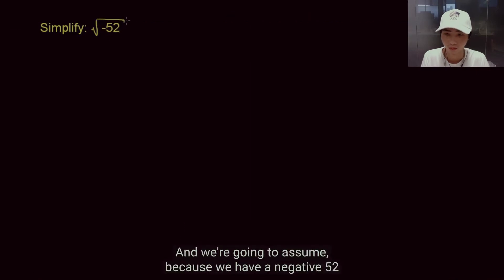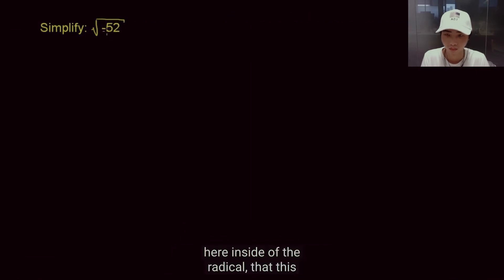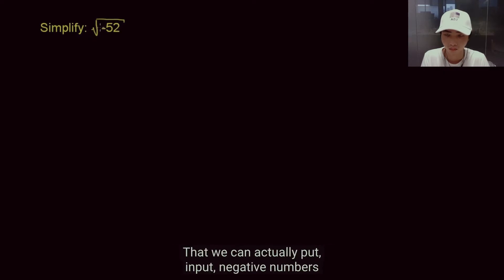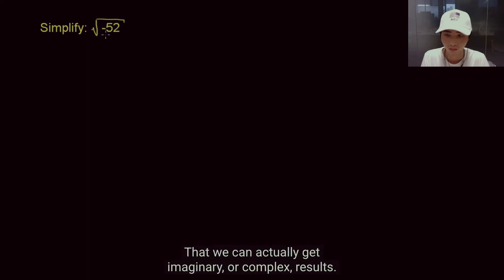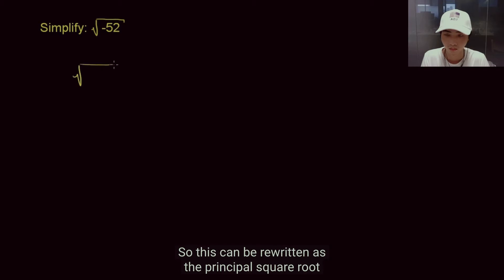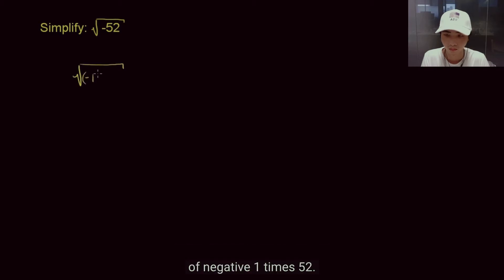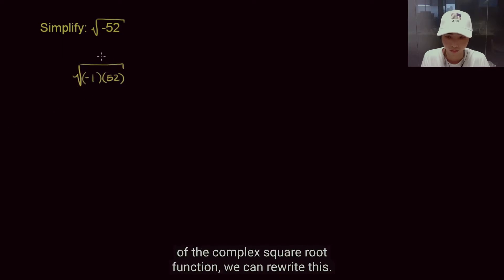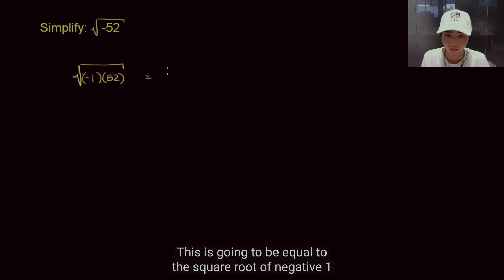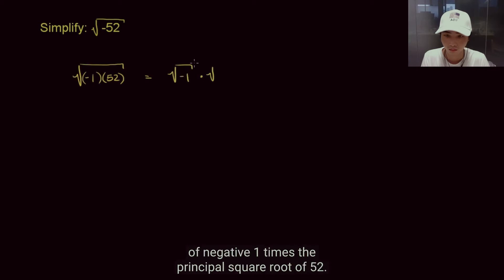We're asked to simplify the principal square root of negative 52. Because we have negative 52 inside the radical, we assume this is the principal branch of the complex square root function — we can input negative numbers and get imaginary or complex results. So we can rewrite negative 52 as negative 1 times 52. This can be rewritten as the principal square root of negative 1 times 52, which equals the square root of negative 1 times the principal square root of 52.